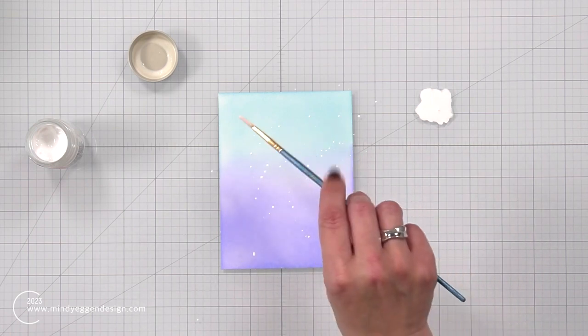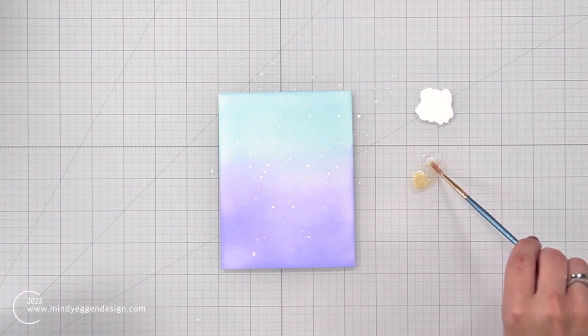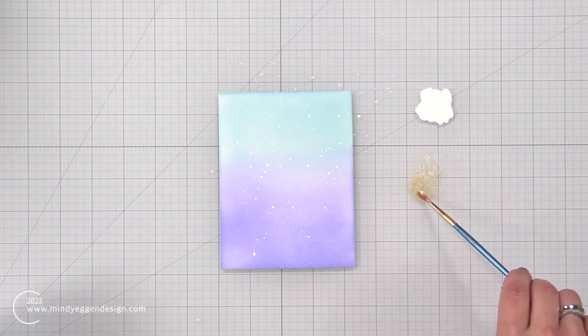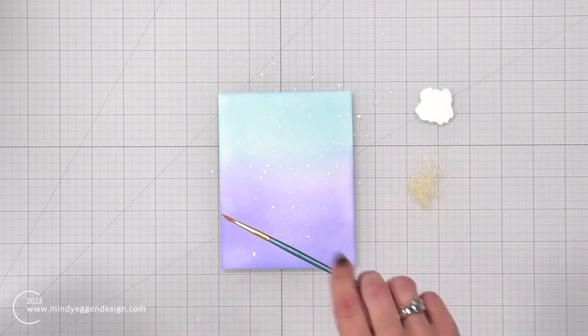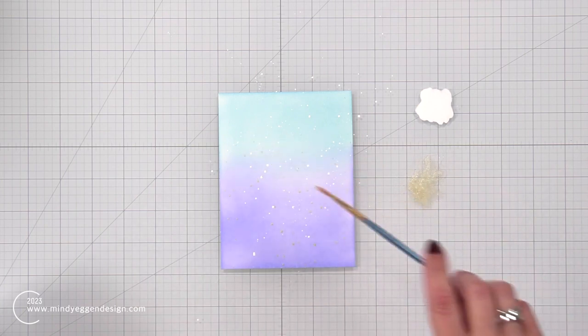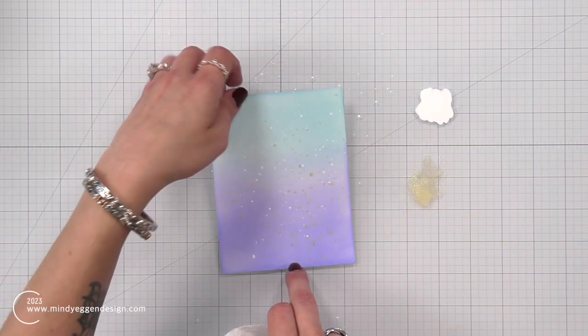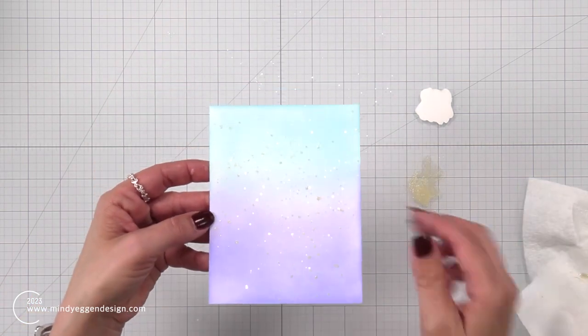Now for a little added interest, I brought in some white paint and added flicks of that to the background, and also some of the liquid stardust. And I was not shy about adding that liquid stardust to the background because I love all the shine and sparkle that it creates.